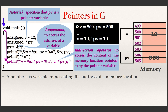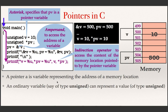A pointer variable is a variable representing the address of a memory location. An ordinary variable of type unsigned can represent a value of type unsigned — for example, unsigned V tells that V can store a value of type unsigned. On the other hand, PV declared as unsigned *PV is a pointer variable which can represent the address of a memory location. The unsigned data type tells that at address 500, the value must be unsigned.